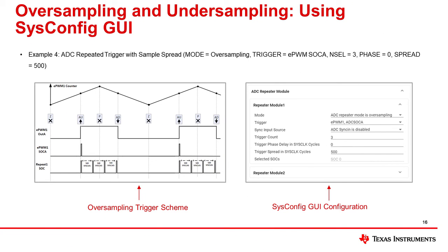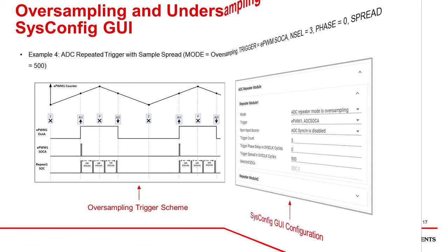If additional time between samples is desired, the application can configure the trigger spread equal to the number of sysclock cycles desired between samples. In this example, EPWMSOCA is used as the trigger source, N is 3, and there is a 500-cycle spread between samples. The oversampling trigger scheme and the equivalent SysConfig configuration are shown here.